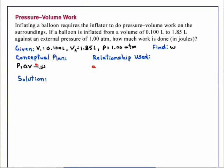In our conceptual plan, we recognize that we have pressure and a volume change, delta V, that we will use to determine work. And the relationship is that work is equal to minus the pressure times change in volume.